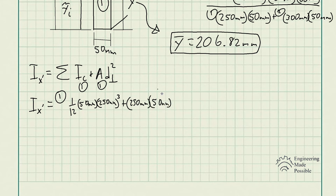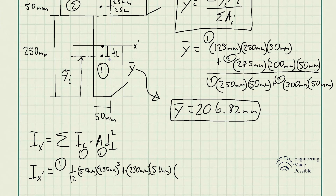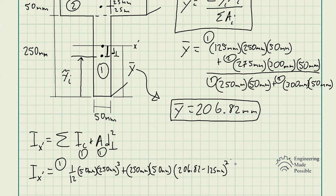We then find the distance from its centroid to the centroid of the T-beam, which is squared in the parallel axis theorem. The centroid of the T-beam is at 206.82 millimeters from the bottom, and the centroid of rectangle one is at 125 millimeters from the bottom. So the perpendicular distance is 206.82 − 125 millimeters, and that distance is squared. That completes the calculation for the first simpler geometry.